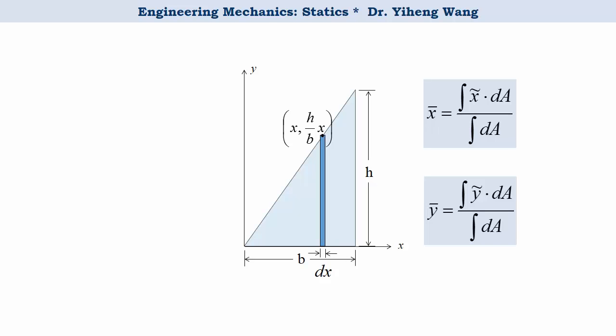Now in these equations, as you can see, x and y are replaced by x tilde and y tilde. This is because now my differential element can no longer represent a particle. Therefore in these two equations, x tilde and y tilde represent the coordinates of the centroid location of the differential element, which in this case is a rectangle, and we know that its centroid is right here at the center. And we can tell that x tilde equals x.